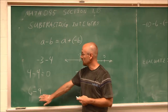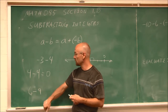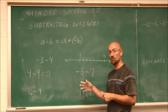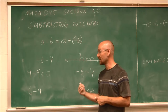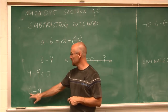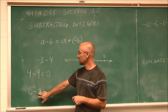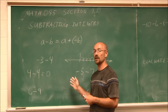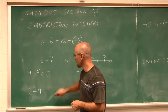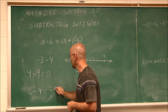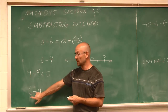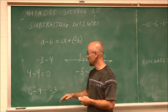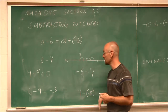Here we have an example where the signs are different. Recall the rhyme: same signs combine; different signs find the difference. We have a positive 6 and a negative 9. So 6 minus 9 — we'd start at 6 and go to the left 9. On a number line, we come to negative 3. The difference of 6 and 9 is 3, the larger value is negative, so the answer is negative 3.